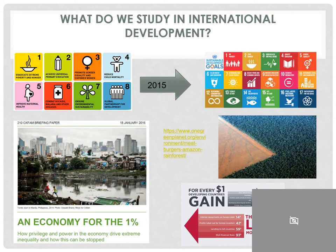Another picture you see here is taken from an Oxfam report in 2016, talking about an economy for the 1%. This report is largely about global inequality and the very wide gap between the wealthy and the poor in the world. And it looks at the issues around it, but also at the ways we can start to address it.